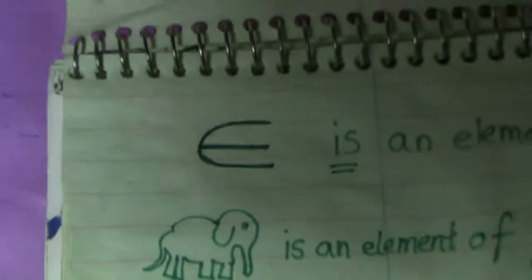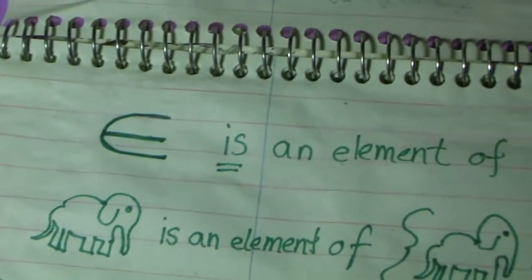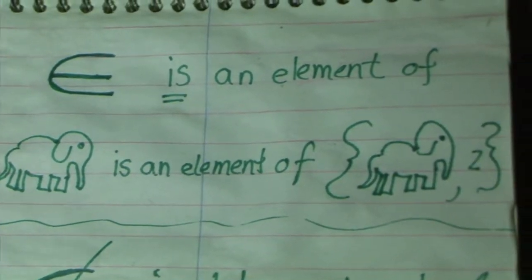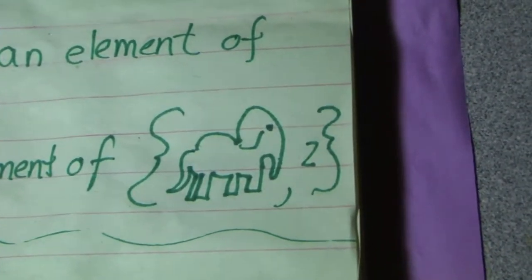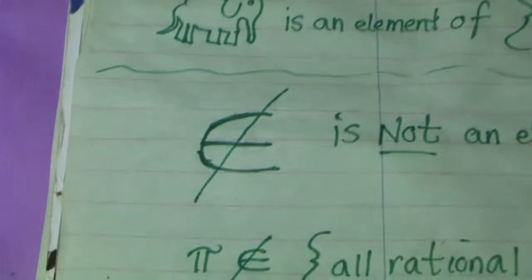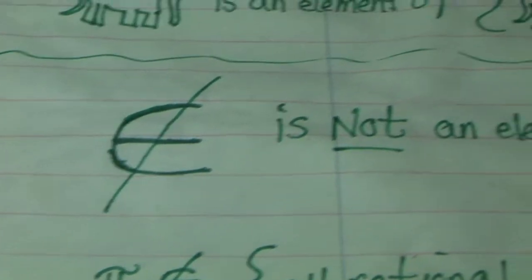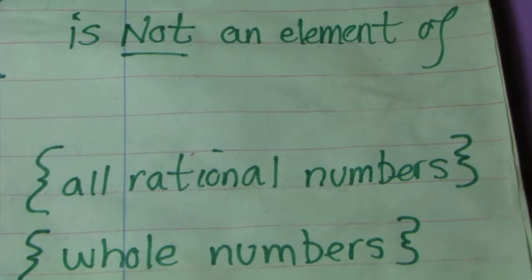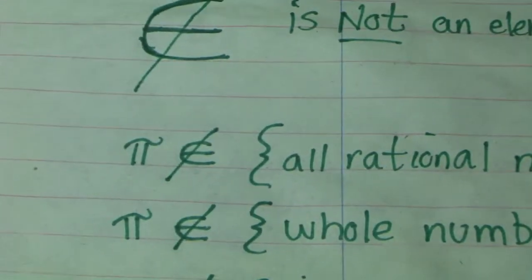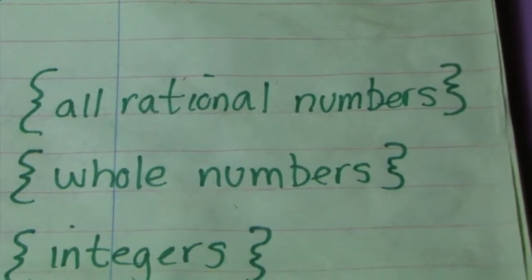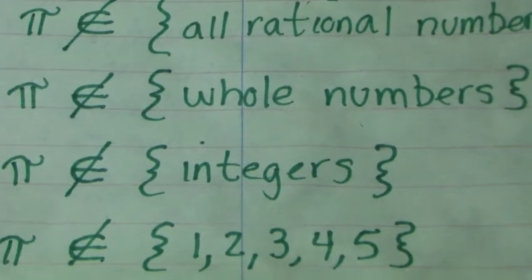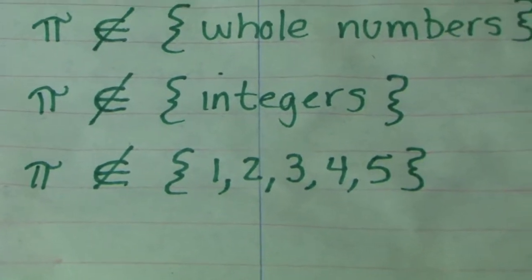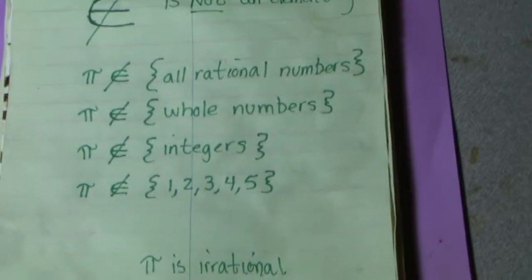See that symbol there? Looks like an elongated E. It means 'is an element of.' For example, see that elephant? It is an element of the set that contains an elephant and a two. Then the same symbol with a slash through it — that means 'is not an element of.' For example, pi is not an element of all rational numbers, and pi is not an element of the whole numbers, and pi is not an element of the integers, and pi is not an element of the set that contains just one, two, three, four, and five.